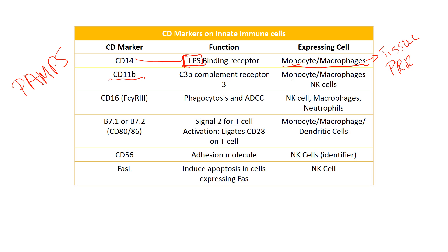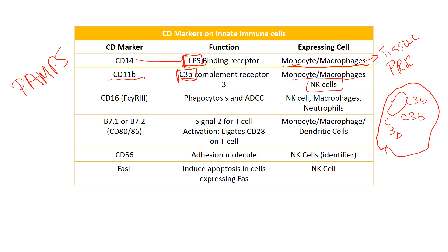CD11B is also a marker on monocytes and macrophages, and is also present on NK cells. CD11B is the C3B complement receptor. C3B is one of the most important components of complement because it's huge for opsonization. When C3B binds to a microbe all over it, it makes it easier for a macrophage to come along and eat it. CD11B is going to bind directly to the C3B, making it a lot easier for the macrophage to gobble it up.